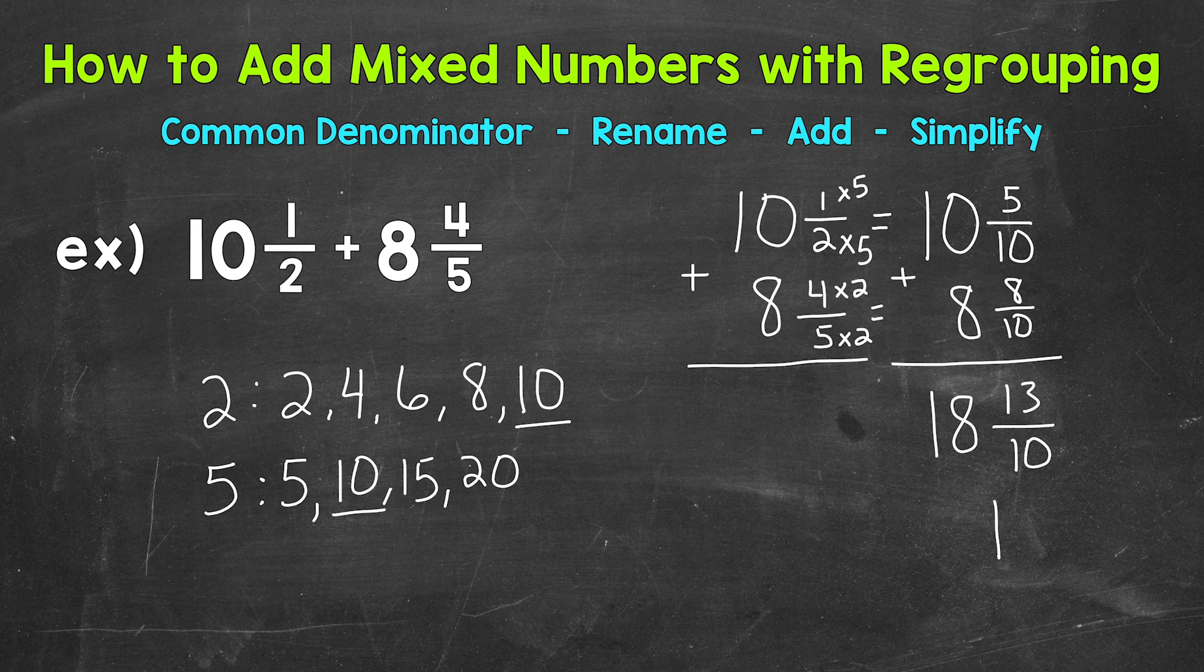We do not hit 13 exactly. We have 3 left over. And we keep our denominator of 10 the same. So 13 tenths is equivalent to 1 and 3 tenths. We're taking out that whole. We are regrouping that whole. So what we can do now, we can think of it as 18 plus 1. We are regrouping that one whole with the whole number of 18. So that's going to give us 19 wholes now. And our fractional part is 3 tenths.